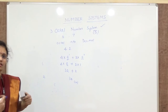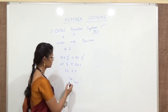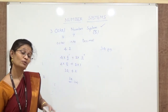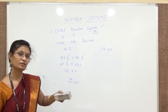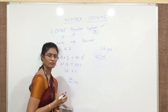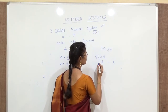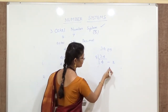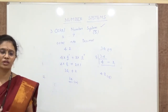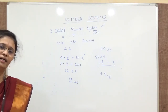For decimal to octal conversion, the same logic used for decimal to binary applies, but we divide by 8 instead of 2. For example, take 34: 34 divided by 8 gives quotient 4, remainder 2. Reading the quotient and remainder gives 42 in octal. So 34 in decimal equals 42 in octal.